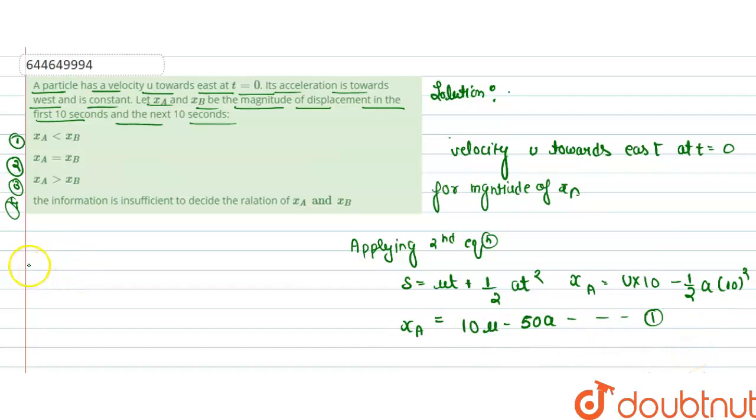For the magnitude of x_b for the next 10 seconds, x_b equals u into 20 minus one-half into a into 400. So x_b equals 20u minus 200a. This is equation 2.